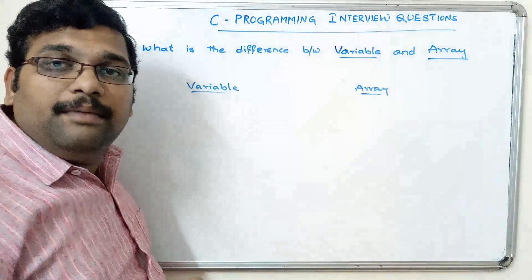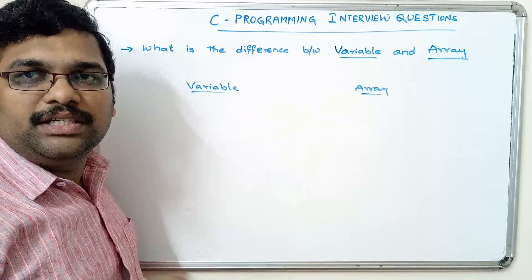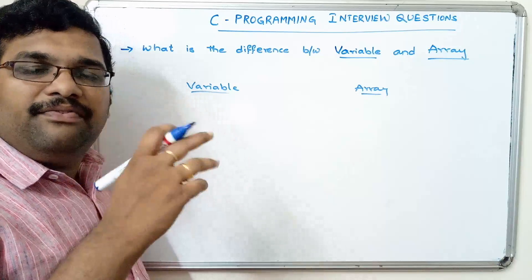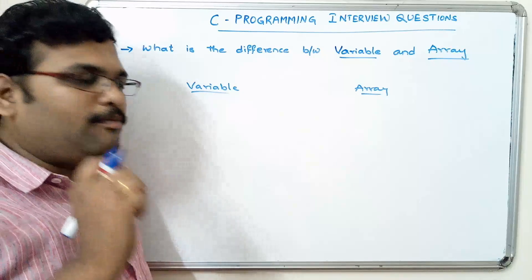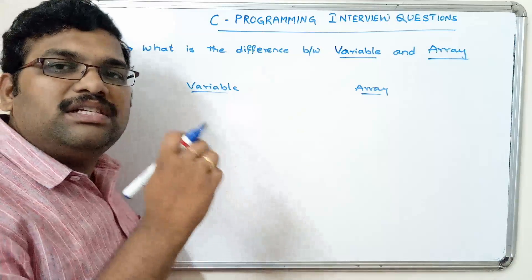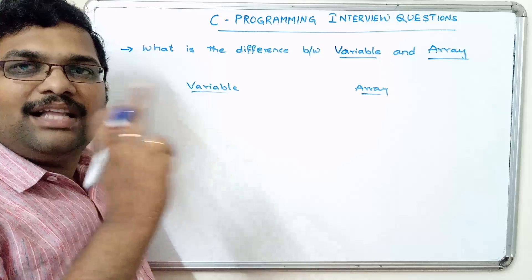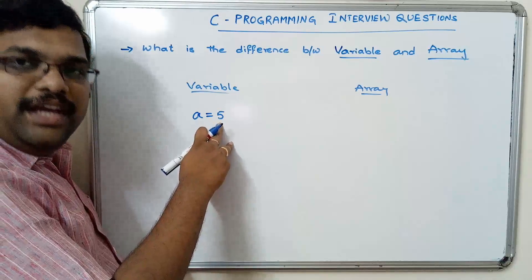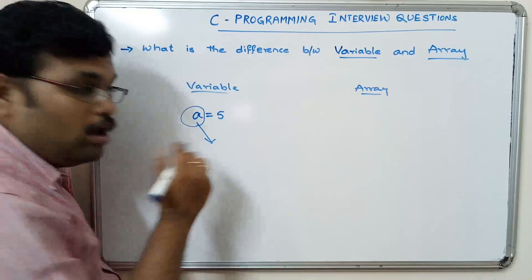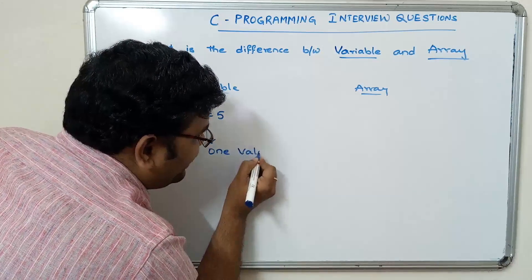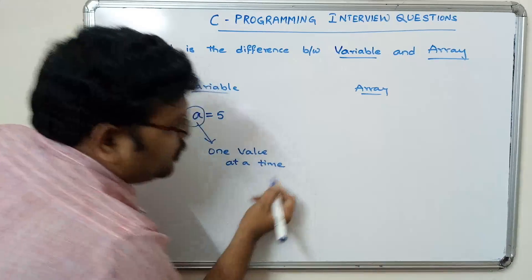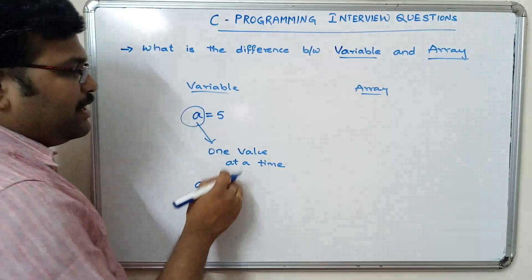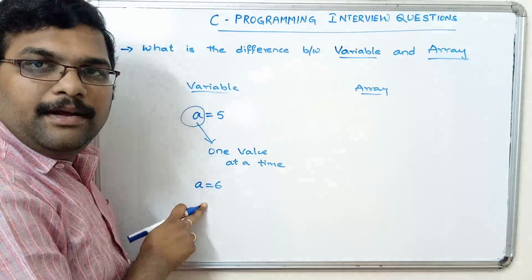A variable is the alternate name given to a memory location. Everything will be stored in memory and the memory is identified by using an address, which is numerical. It is somewhat difficult to remember all the addresses, so we give a name to that particular memory location — that is called a variable. So if a = 5, this means 'a' is a variable which holds the value 5, and a variable can hold only one value at a time. If you update a = 6, then 6 will be assigned to 'a', not both 5 and 6.